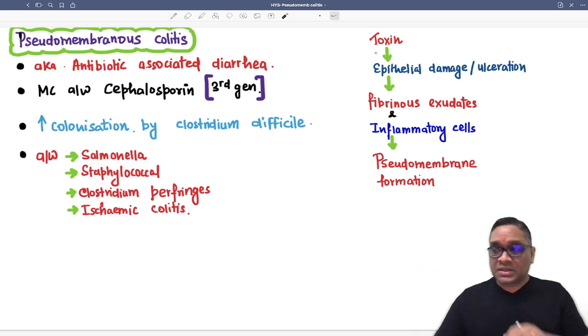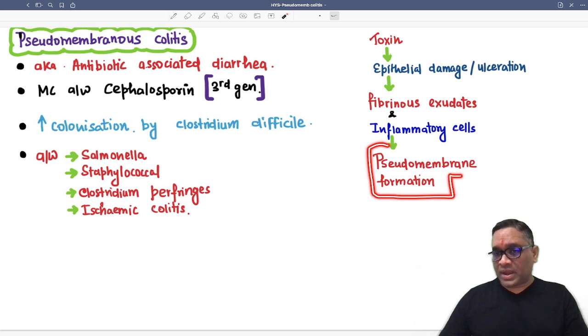And in this pseudomembranous colitis, what happens? Toxin from all these things will be causing epithelial damage and ulceration. And because of the epithelial damage, there are smaller blood vessels, so they are going to release fibrin. So fibrin along with inflammation, they are going to form fibrinous exudates. And these fibrinous exudates, along with the inflammatory cells, they are going to form a pseudomembrane.